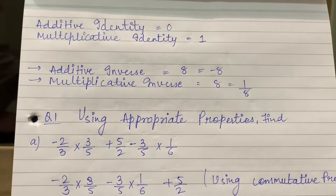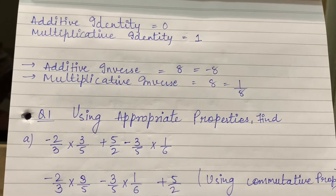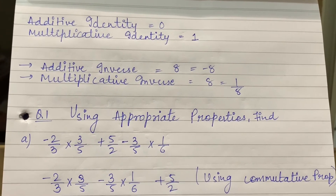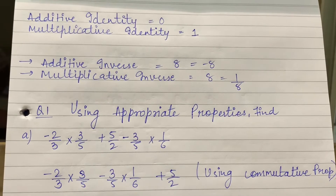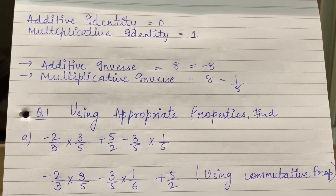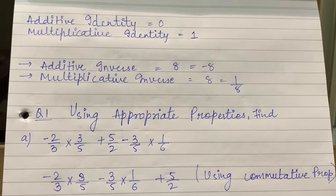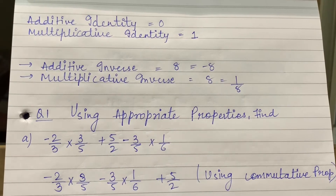Additive inverse of minus 6 upon 2 will be plus 6 upon 2. Clear this point? Additive identity, multiplicative identity, additive inverse and multiplicative inverse — these four points are now clear.